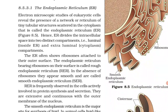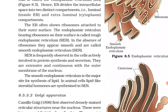The endoplasmic reticulum: electron microscopic studies of eukaryotic cells reveal the presence of a network or reticulum of tiny tubular structures scattered in the cytoplasm called the endoplasmic reticulum. The endoplasmic reticulum divides the intracellular space into two distinct compartments — luminal (inside ER) and extra-luminal (cytoplasm) compartments. The ER bearing ribosomes on their surface is called rough endoplasmic reticulum; in the absence of ribosomes they appear smooth and are called smooth endoplasmic reticulum.